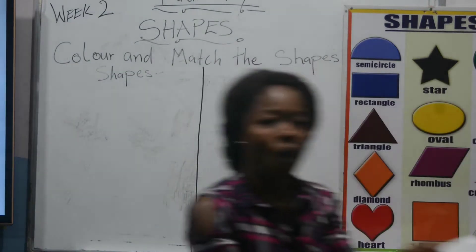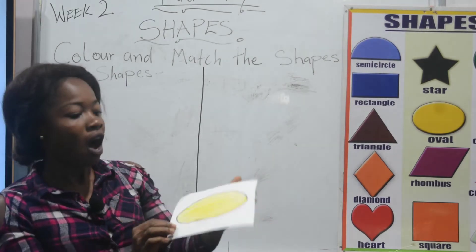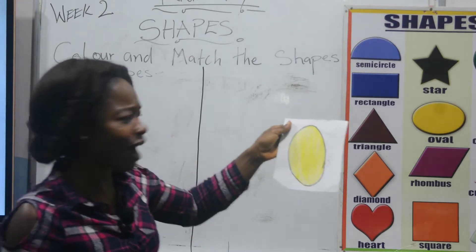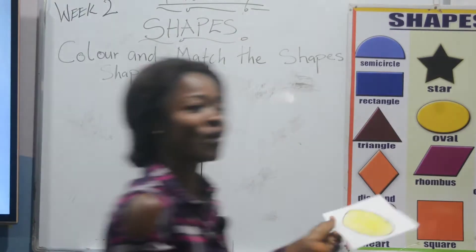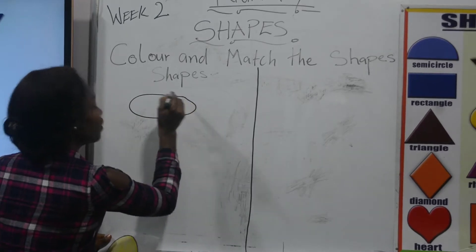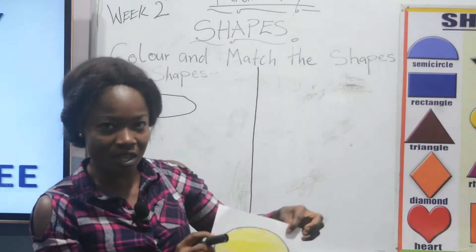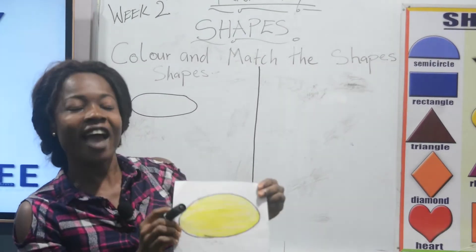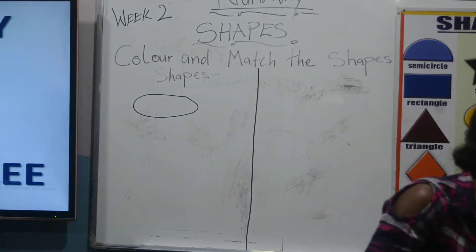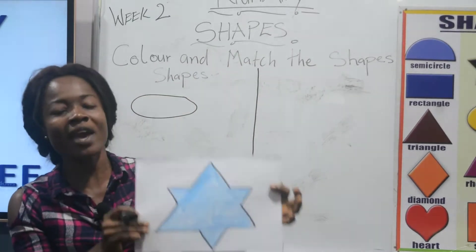We have oval. Repeat after me: oval. How does oval look like? It looks like an egg. Okay, so we are going to draw oval. Now can you see it? Oval — repeat after me. Again. Very good!